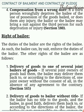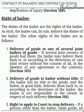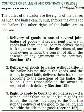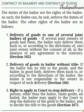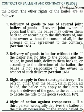First, delivery of goods to one of the several joint bailors: If several joint owners of goods bail them, the bailee may deliver them back to or according to the directions of one joint owner, without the consent of all, in the absence of any agreement to the contrary. Section 165.